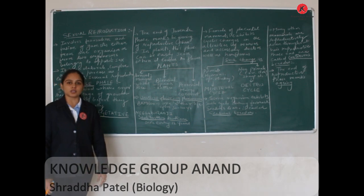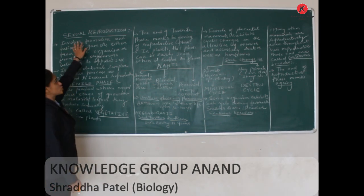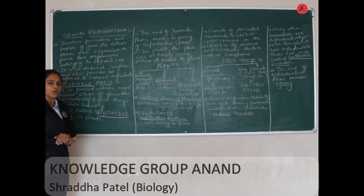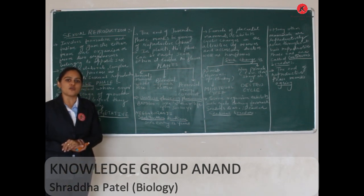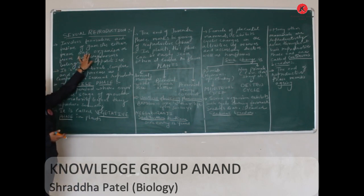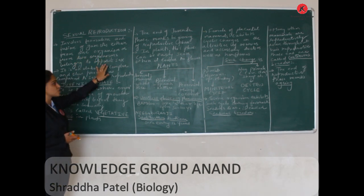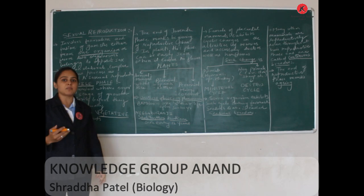Chapter 1: Reproduction in Organisms. Here we are discussing sexual reproduction. What do you mean by sexual reproduction? Sexual reproduction involves formation and fusion of gametes. These gametes may belong to one individual or may come from two organisms belonging to the opposite sex. If we are talking about gametes from one organism, the whole organism is bisexual.